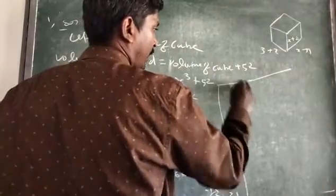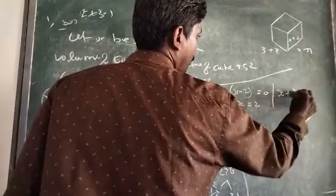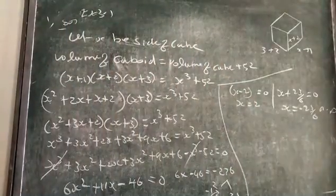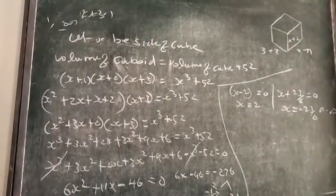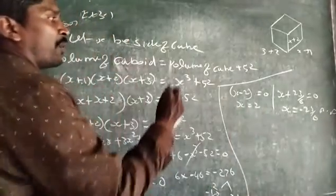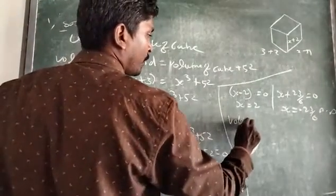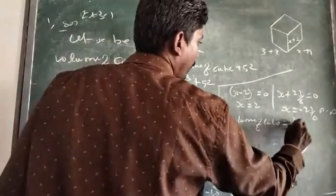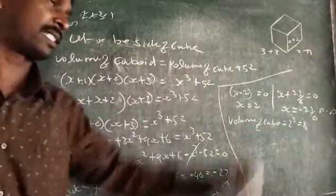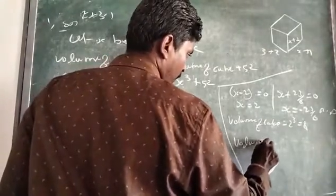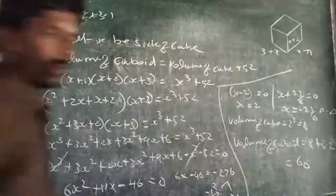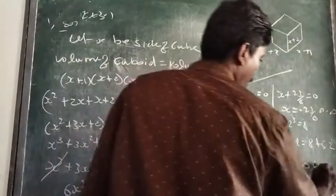So x minus 2 equals 0 gives x equals 2. This is the valid root since it gives a positive side length. Volume of cube equals 2³ equals 8. Volume of cuboid equals volume of cube plus 52, so 8 plus 52 equals 60 cubic units.